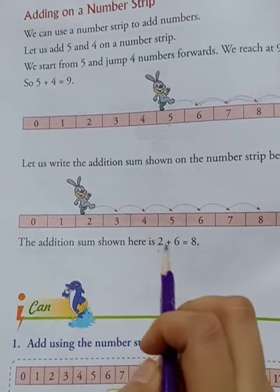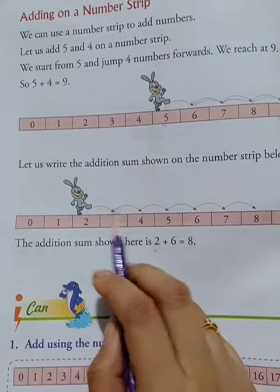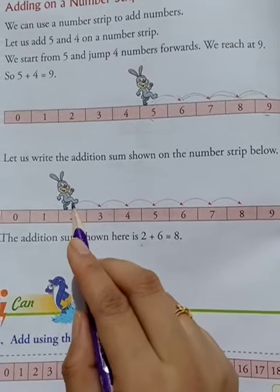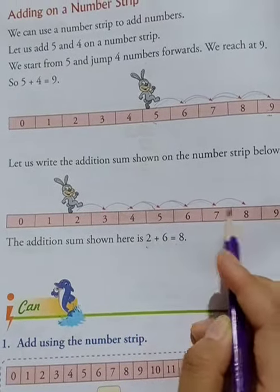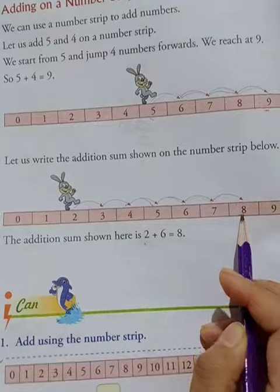From two, we have to jump six: one, two, three, four, five, six. The answer is eight. Two plus six equals eight.